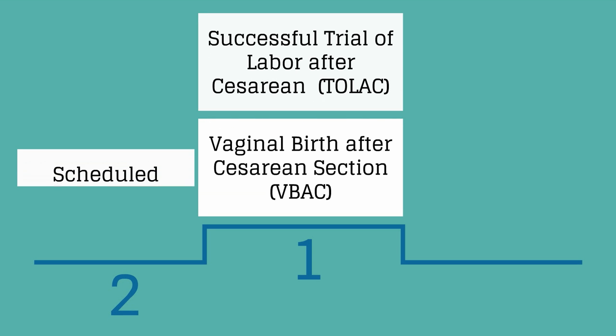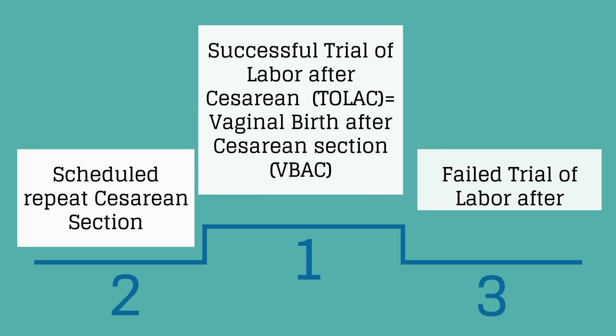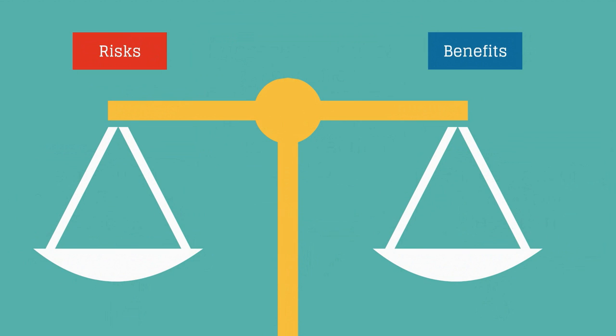Our next preferred option would be a scheduled repeat low transverse cesarean section at 39 weeks. Our third preferred option is a failed trial of labor after cesarean and she still ultimately needs a cesarean delivery. This option has the highest rates of maternal morbidity with higher rates of bleeding and infection. It is important to weigh the risks and benefits when making these decisions with our patients.